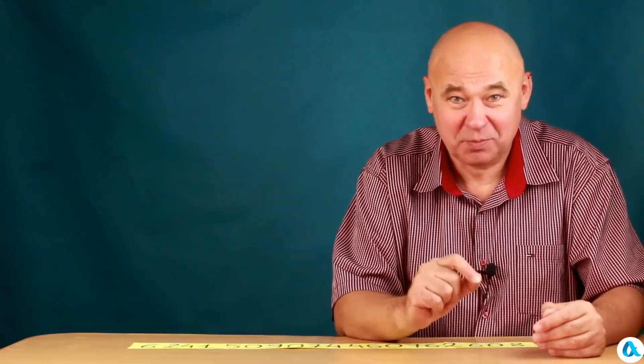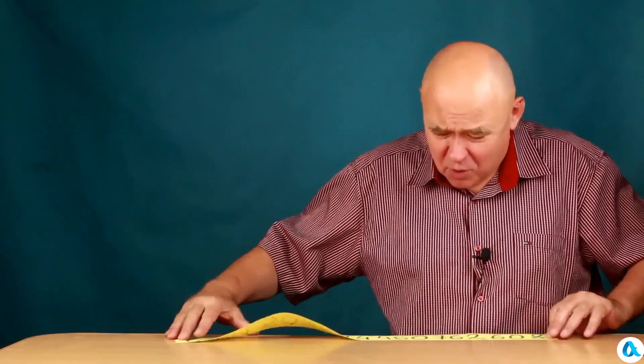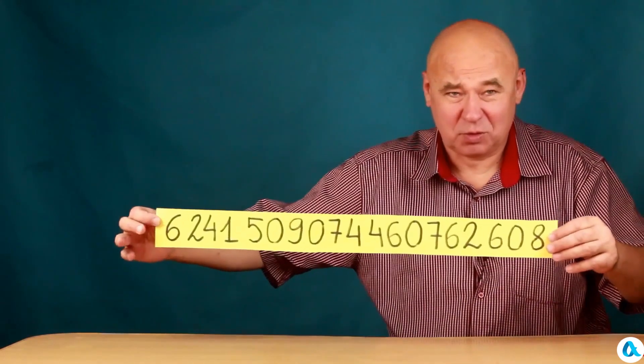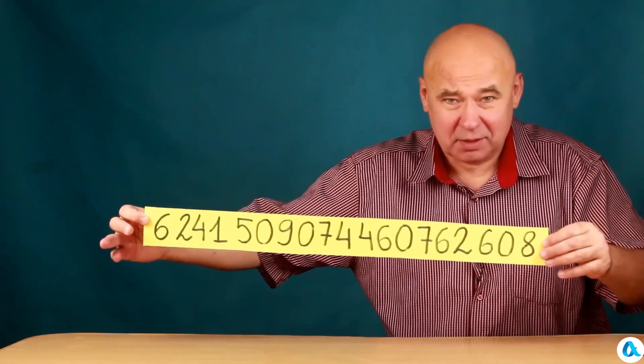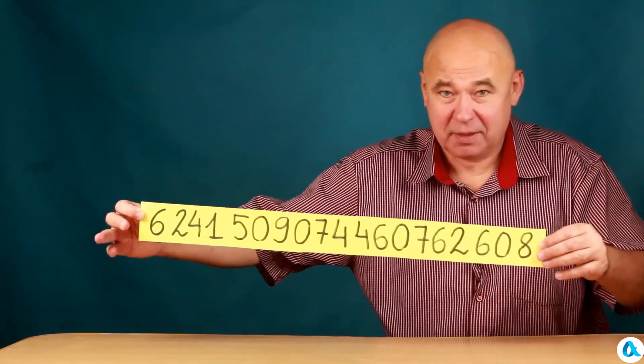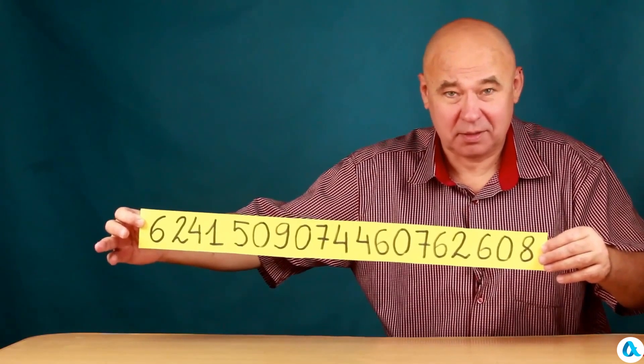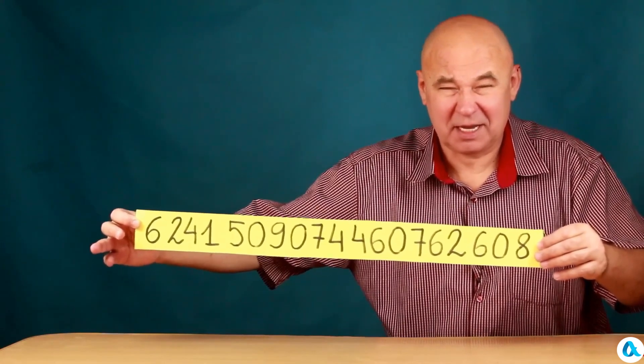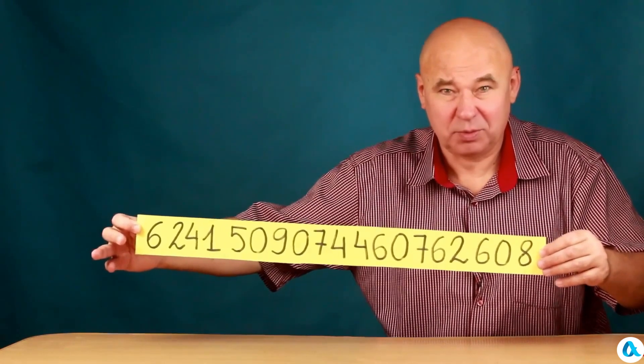And that's not even all. Because recently, the coulomb has been defined differently. You need to take such a number of electrons to get an elementary charge, well, actually, negative one coulomb.